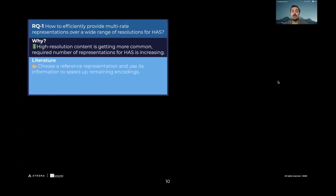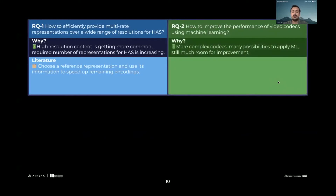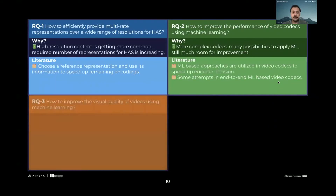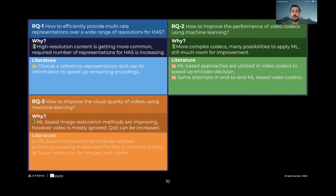In the literature, choosing a reference representation is the go-to solution. The second question is: how can we improve the performance of video codecs using machine learning? This is important because video codecs are getting more and more complex and there is still room for improvement. The third question is: how can we improve the quality of videos using machine learning? There is a huge increase in image-based enhancement options in the literature, but videos are mostly what matters. If we can achieve this, we can achieve a better quality of experience for users.